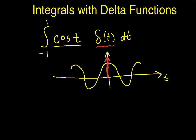Now, when I multiply cosine times the delta, then for values of t anything that is not 0, the delta function is 0. You can see the delta function exists only at 0. So for any values of t that are not 0, the delta function equals 0, and the cosine of t is whatever it is, but 0 times the cosine of t is 0. For any value of t where the delta function is 0, the product of cosine of t times the delta function is also 0.